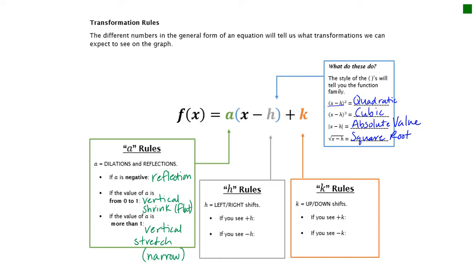Those are your a rules. For the h rules: h is always inside the parentheses or whatever symbol your family uses. H always shifts you left and right, and it's a little tricky because you always do the opposite of what the sign looks like. If you see plus h, it shifts the graph to the left. If you see minus h, it shifts the graph to the right.